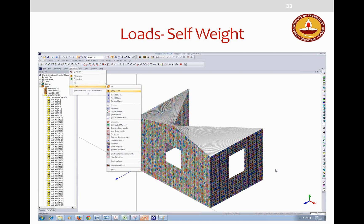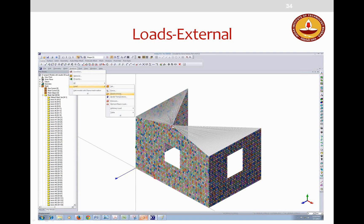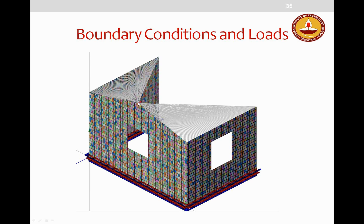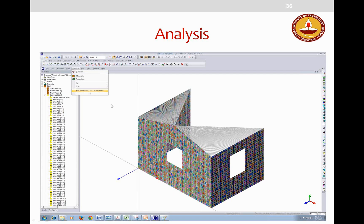For pushover analysis, displacement-based loading is applied at the top of the gable using 'Analysis > Load > Displacement,' with a displacement load of 40 mm. Once all steps are complete, the final model is ready for analysis. The arrow indicates the direction of displacement load application at the gable top, and fixed boundary conditions are shown at the base. Analysis is then run using 'Analysis > Edit Model with Diana Mesh Editor,' where structural nonlinear analysis is carried out.